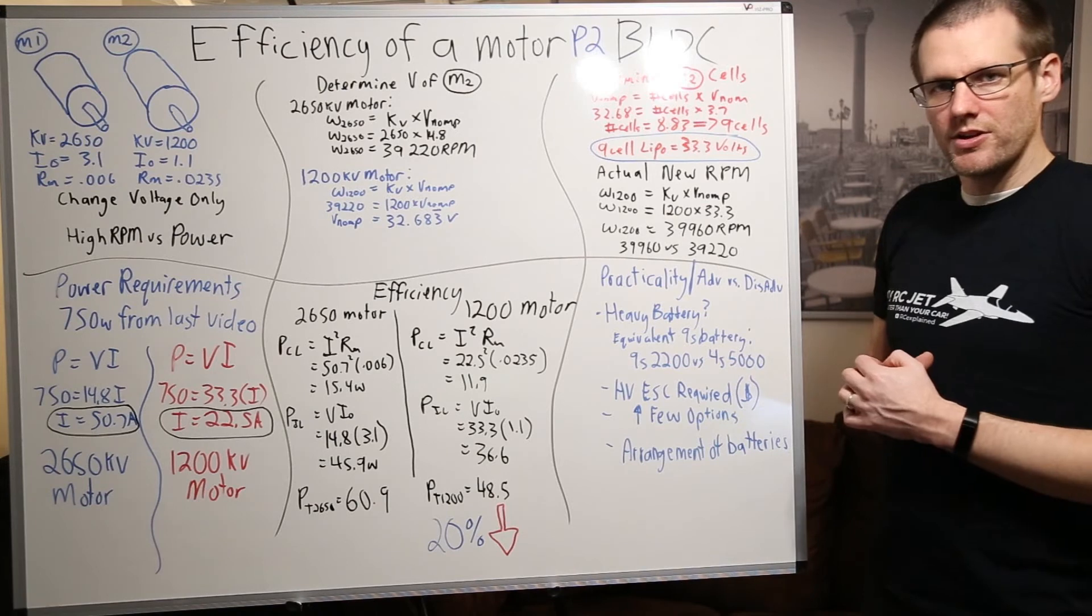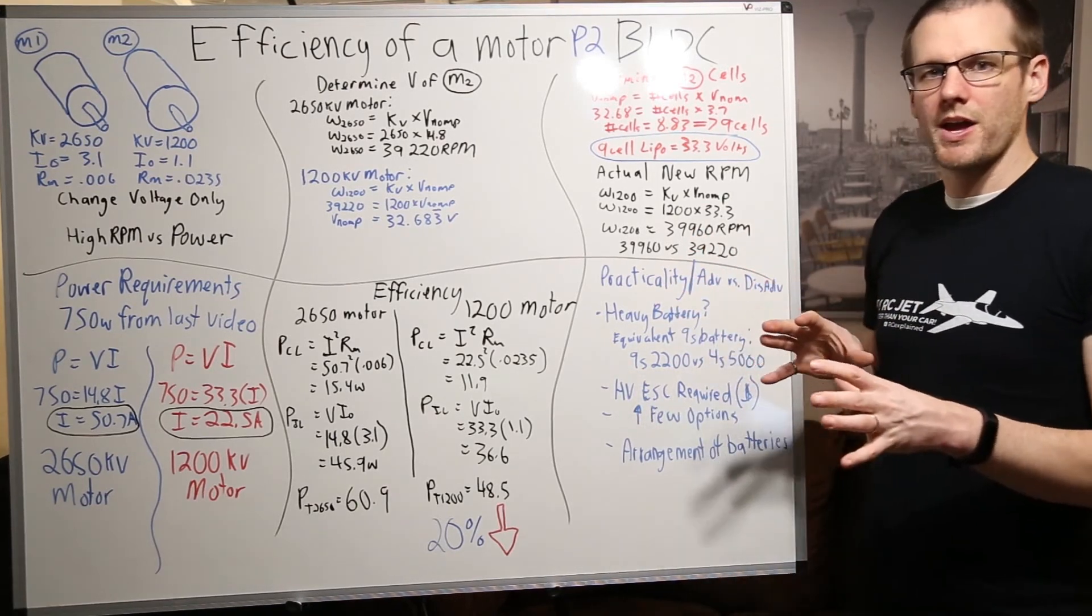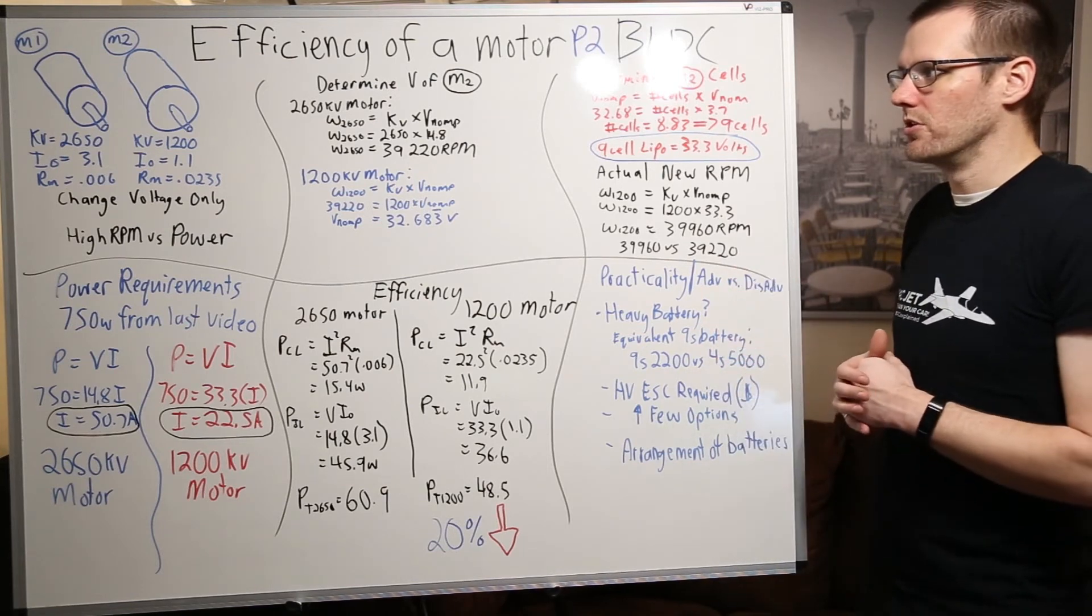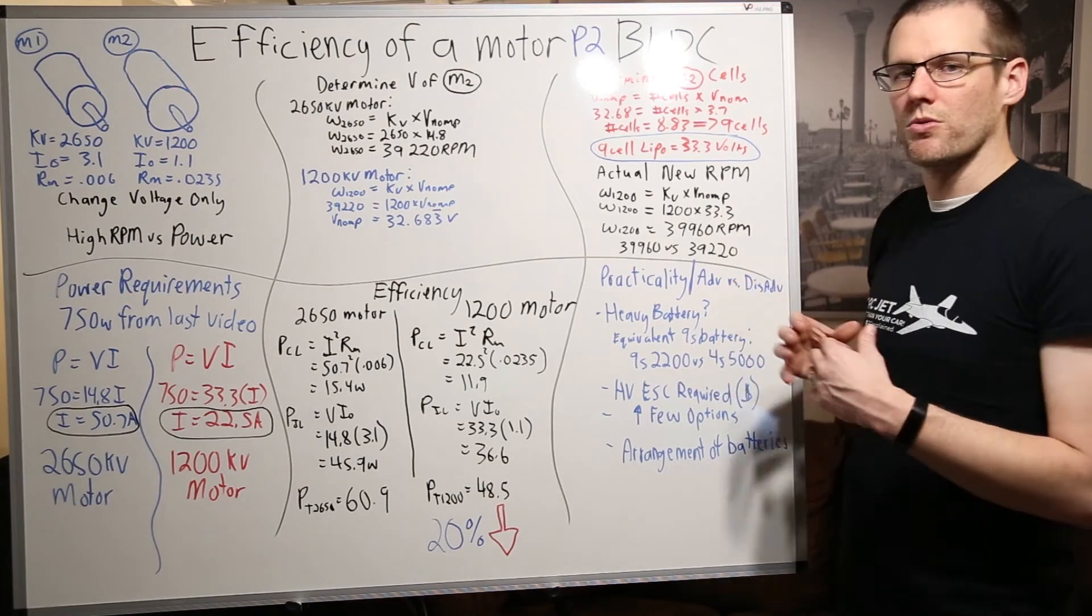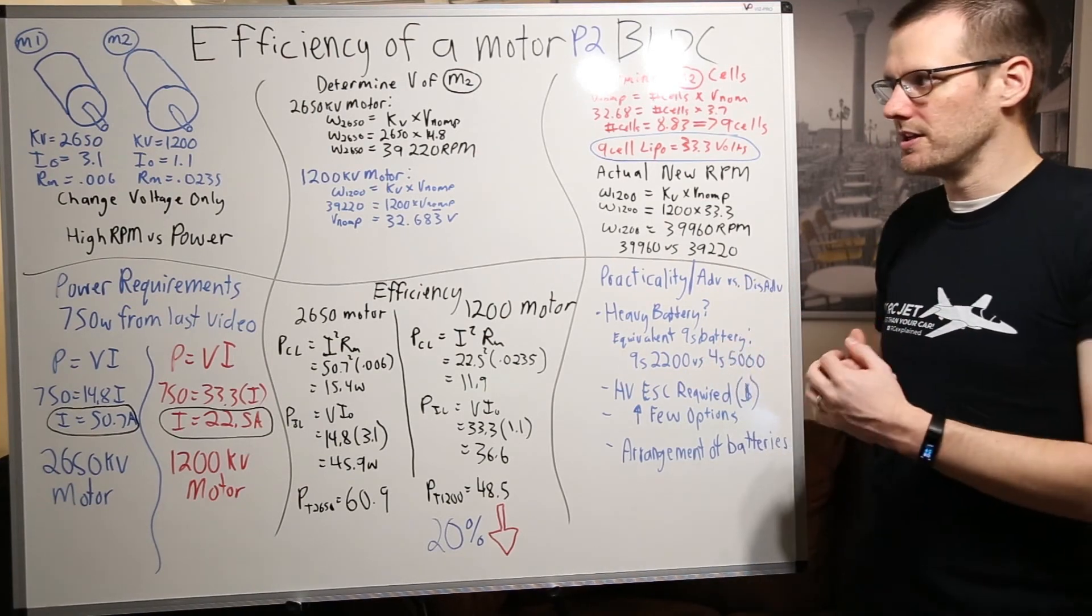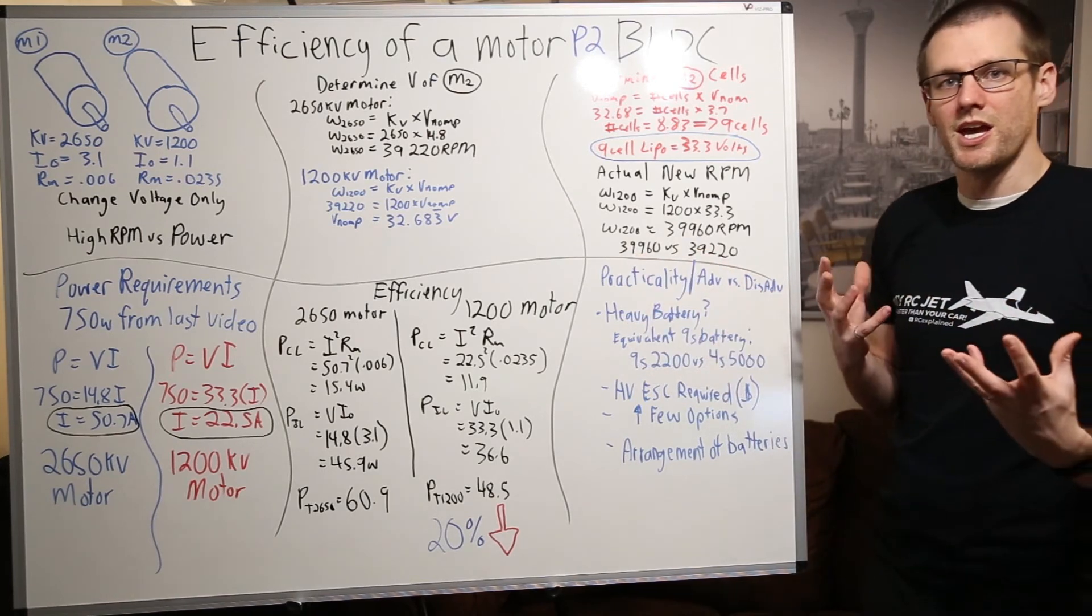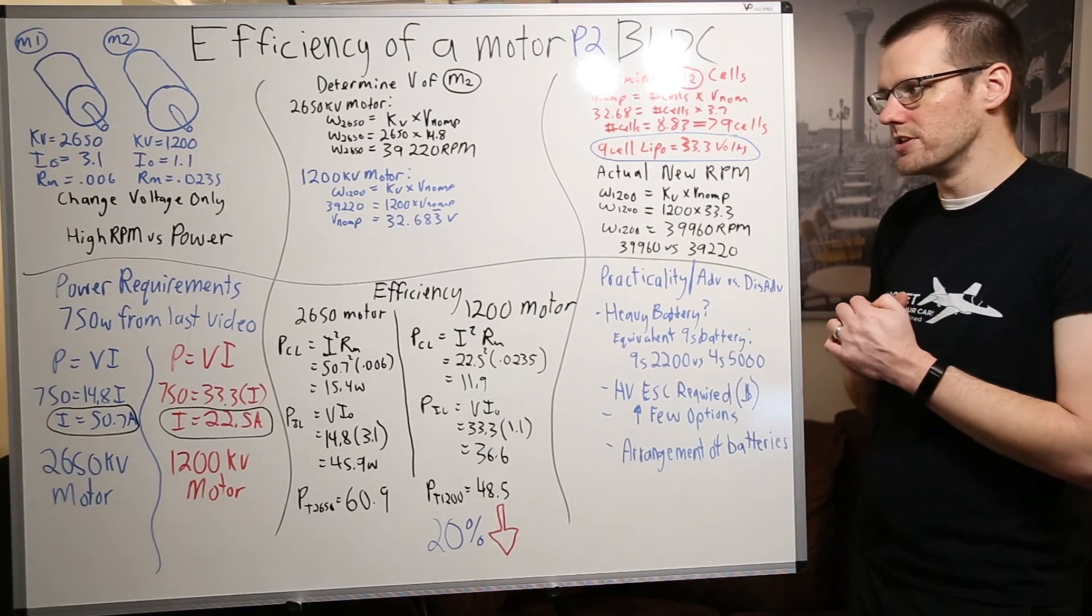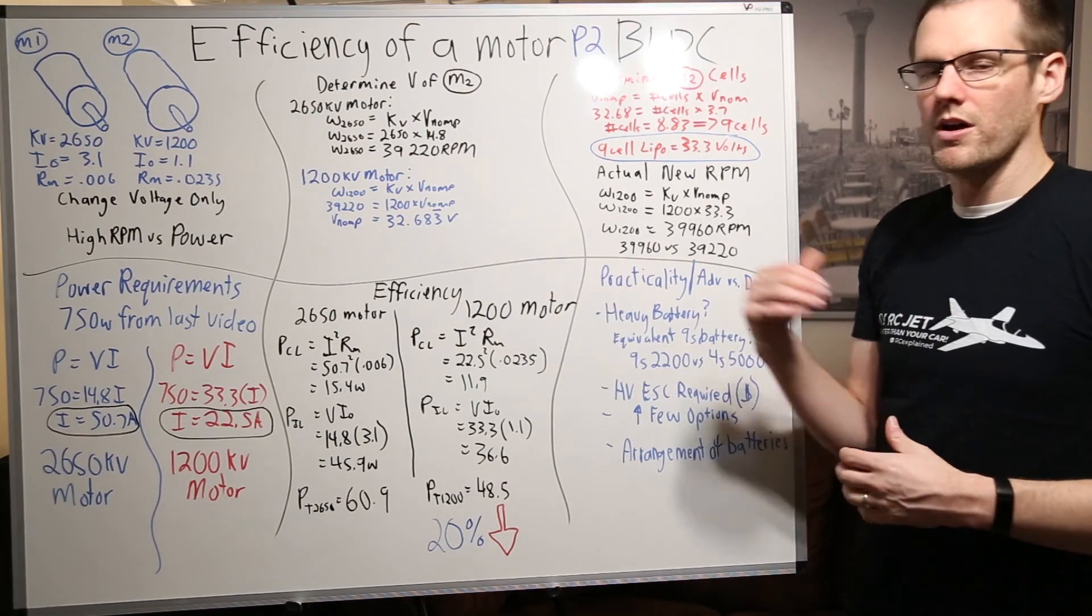So there you have it. You're able to see from our first video how we compare the two scenarios that we have brushless motor number one verse two when we only change the gear ratio. In this video we talk about only changing the voltage and we maintain the same gear ratio because our RPM is actually very close to the same. So we don't need to touch our gear ratios. You can see the difference that it makes in a theoretical manner to our efficiency.